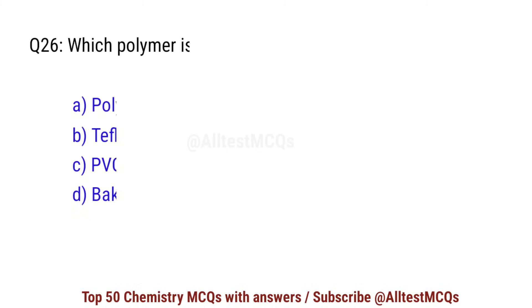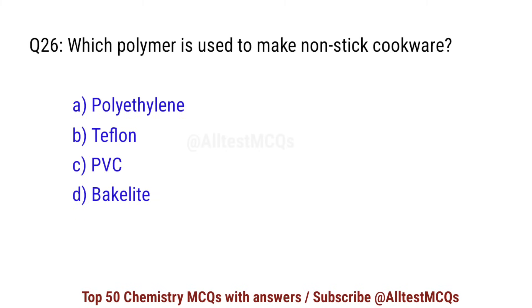Question number 26. Which polymer is used to make non-stick cookware? Right option is B: Teflon.